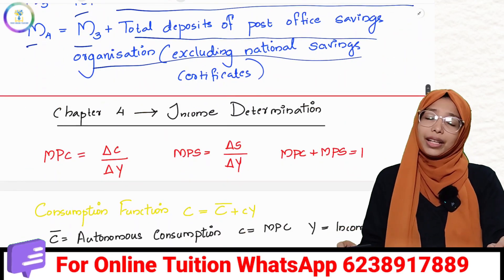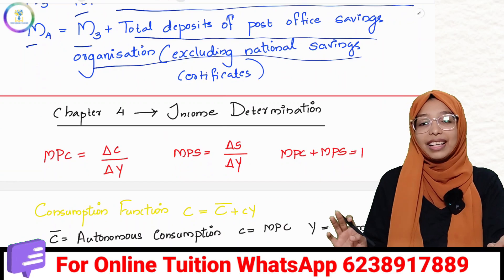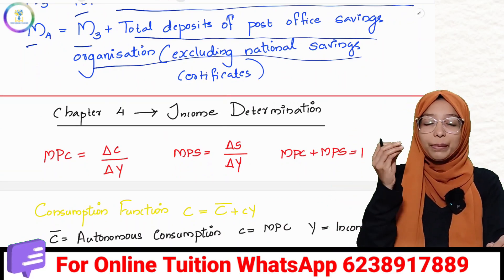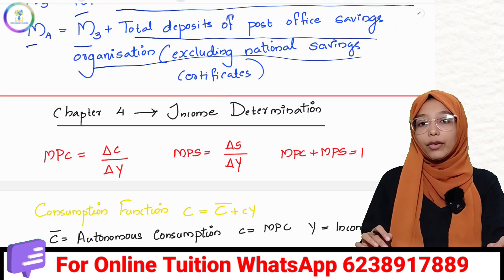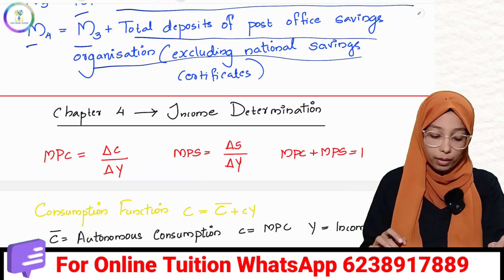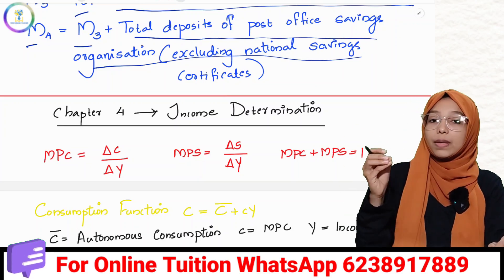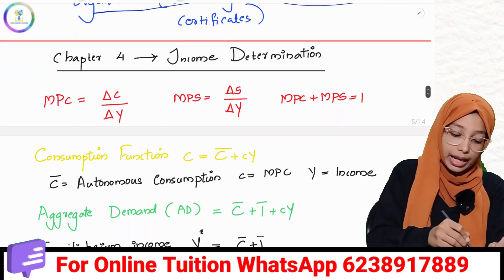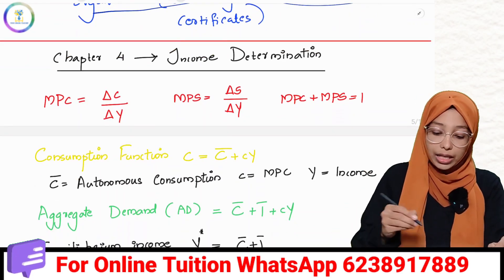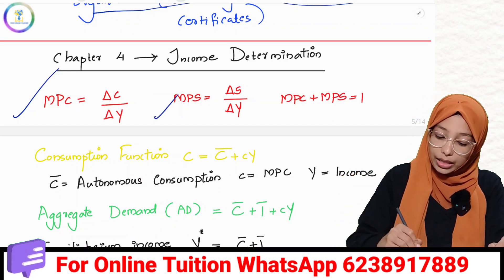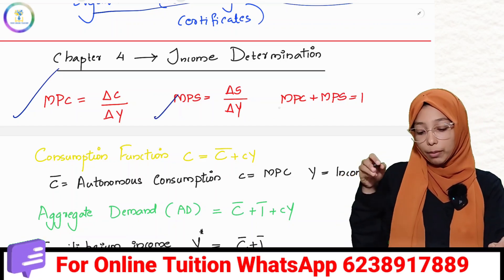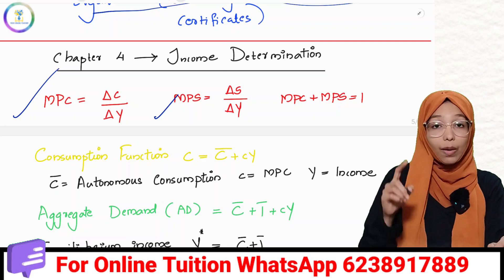Chapter 4, income determination. MPC, marginal propensity to consume, is delta C by delta Y. Marginal propensity to save is delta S by delta Y. MPC plus MPS equals 1.